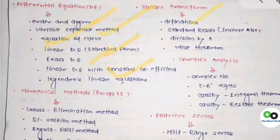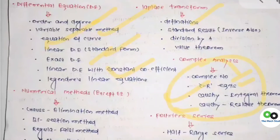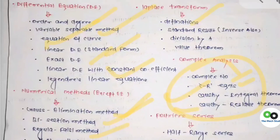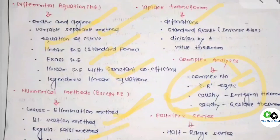For Numerical Methods, remember the required formulas and do not skip at all, because these questions are very easy. Similarly, Laplace Transforms are also very easy as they are formula-based questions — you only need to know the definition and standard results, which is sufficient. For Complex Analysis, you need to study: complex numbers, Cauchy-Riemann equations, Cauchy's integral theorem, and Cauchy's residue theorem. For numerical methods specifically, remember the formulas for the Regula Falsi method, Newton-Raphson method, and Euler's method — these have been continuously coming in the last three to four years and are two-mark questions.